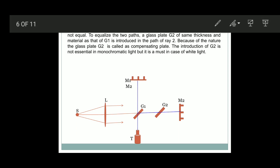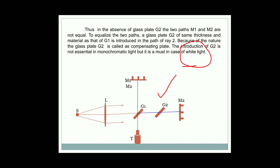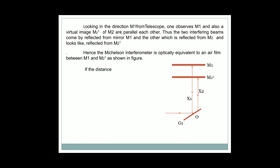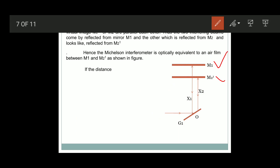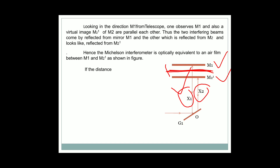If it is monochromatic light, glass plate G2 is not compulsory. If it is white light, glass plate G2 is compulsory to observe the interference fringes. As shown in the diagram, M1 is mirror M1, and M2-dash is the virtual image of mirror M2. Ray 1 travels along M1 at a distance X1, and ray 2 travels along mirror M2 at a distance X2. If those two distances are not equal, there is an air gap between M1 and M2.